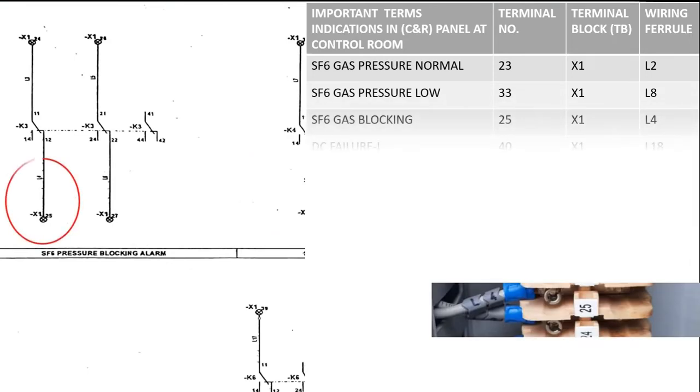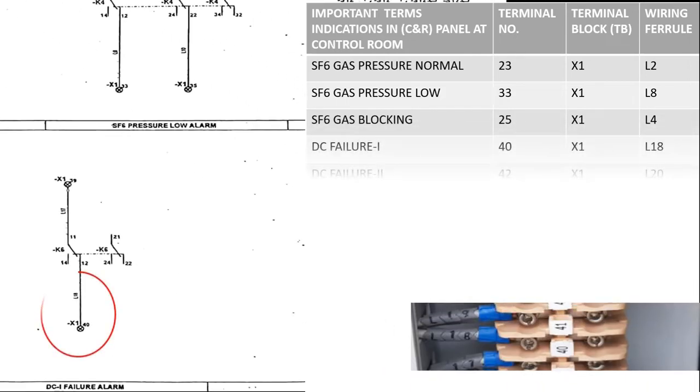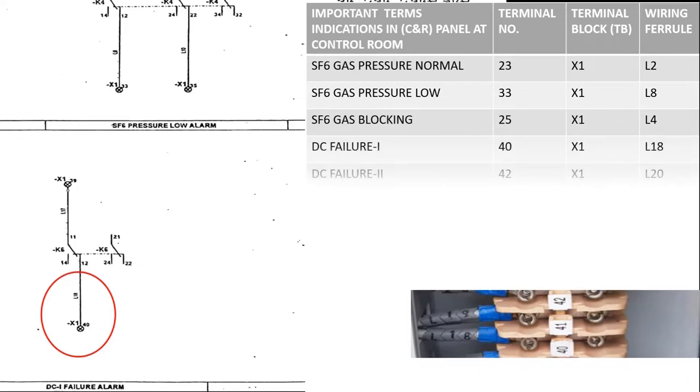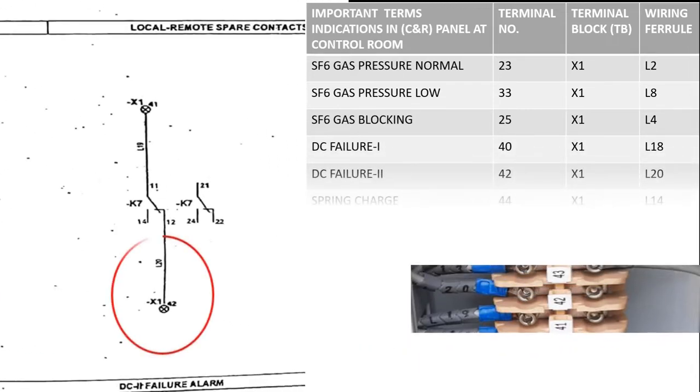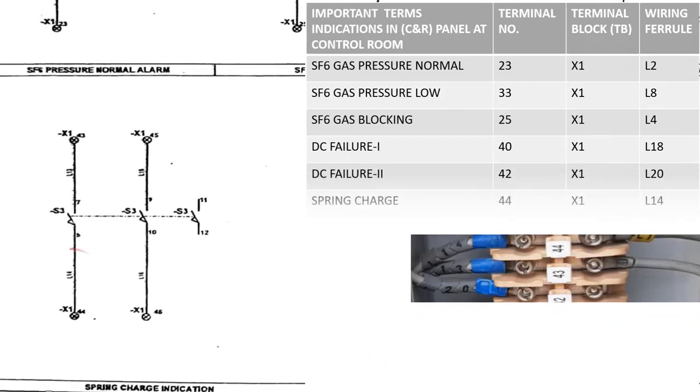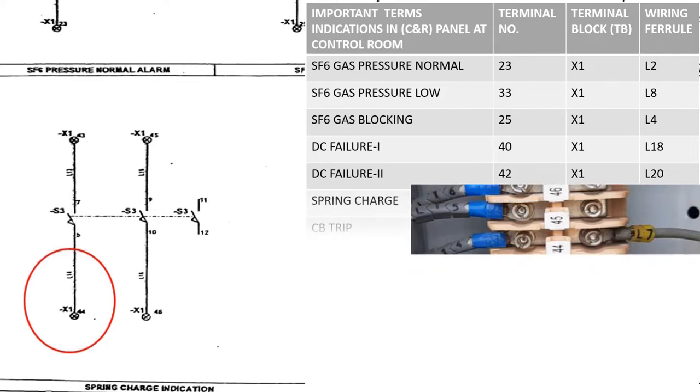Excessive gas blocking terminal 25 TBX1 ferrule L4, DC failure 1 TBX1 terminal 40 ferrule L18, DC failure 2 terminal 42 TBX1 ferrule L20, spring charge indication on terminal 44 TBX1 ferrule L14.